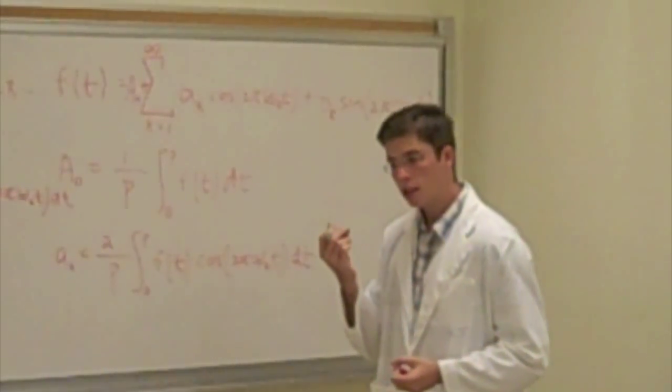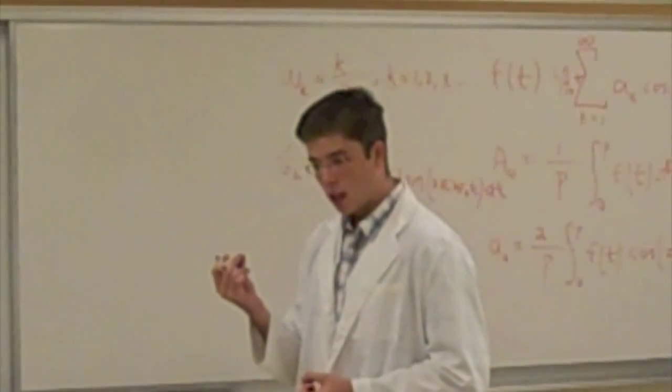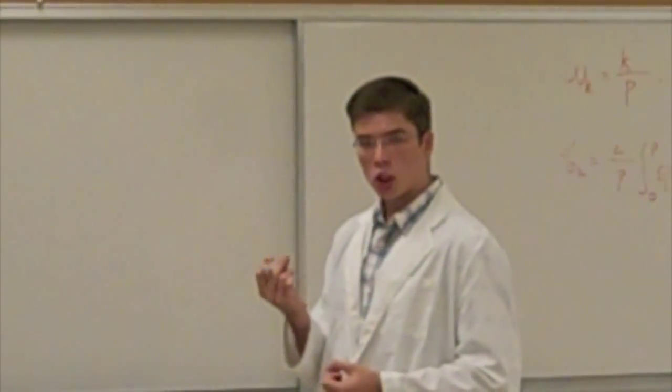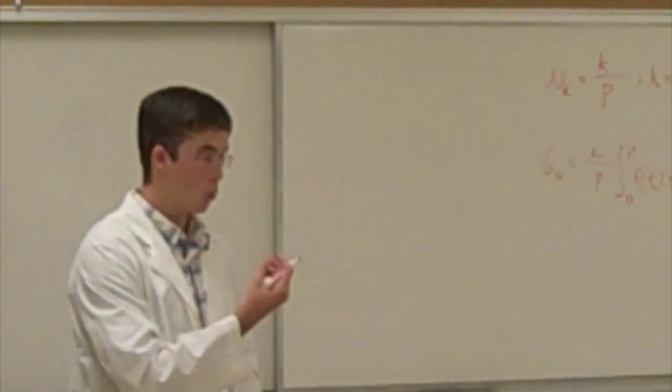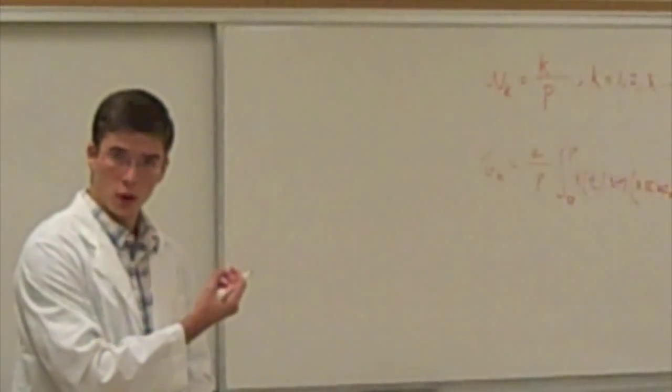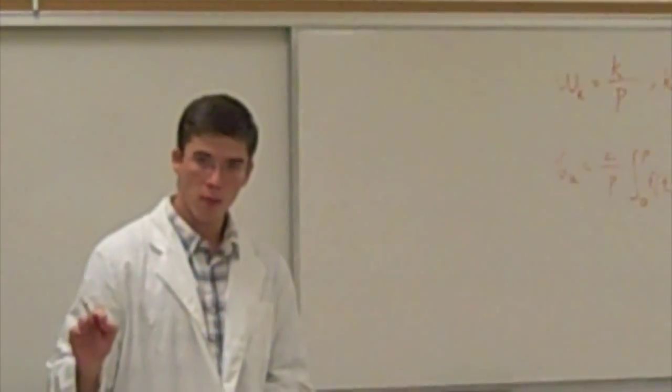That, ladies and gentlemen, is amazing. In fact, it is so amazing that when Jean Fourier, the 19th century French mathematician who came up with this theory, first proposed this, he was unanimously rejected by the mathematical community.